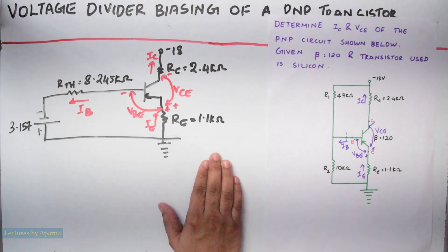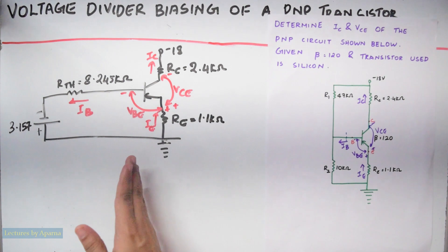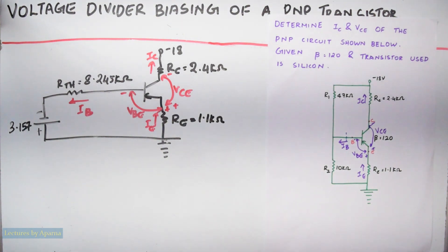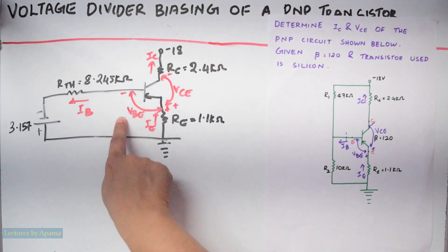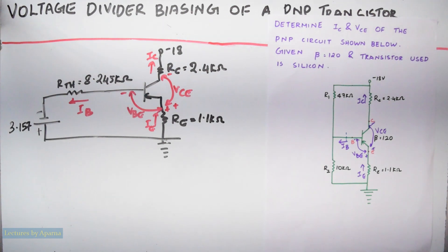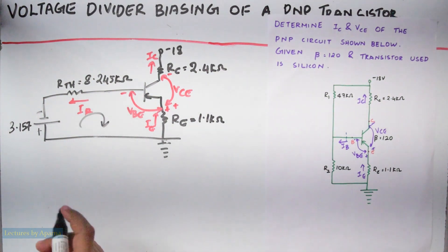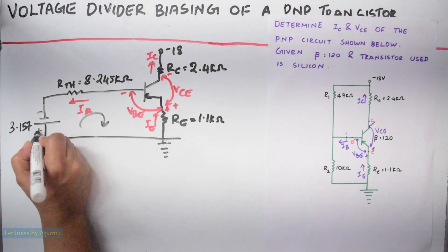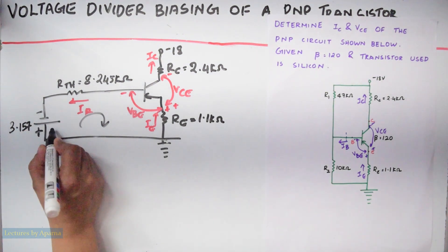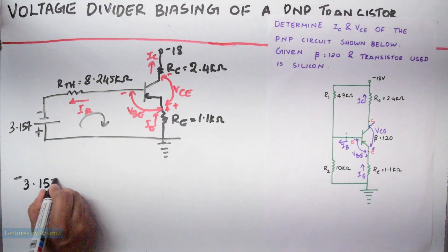Now let us analyze this circuit. Consider the input section. We have to apply KVL — Kirchhoff's Voltage Law — and write the loop equation. KVL states that the algebraic sum of voltages in a loop equals zero. Going in this direction and starting from here: when we go from plus to minus, it is a decrease in potential, so we write minus 3.157.